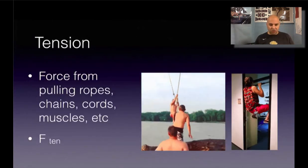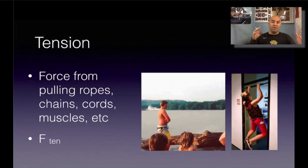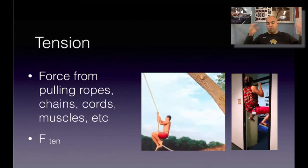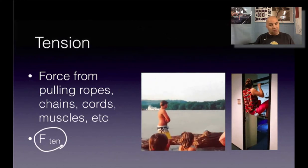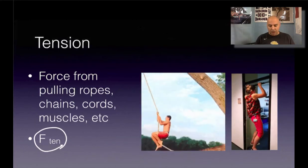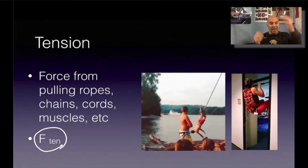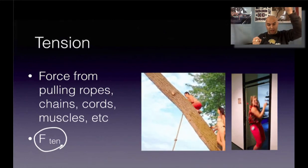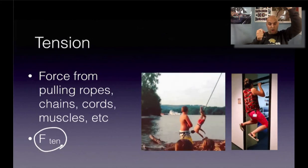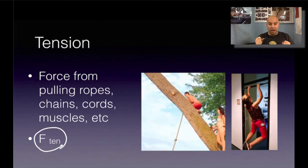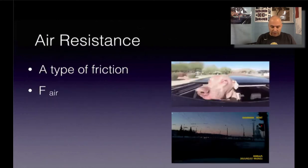The next one is tension. You have tension when you have ropes, chains, cords, muscles, or anything like that. I use F sub TEN for that. The idea is if you take a rope and pull on it, the force of tension is in the rope because something is pulling on it — that's going to be something we use quite a bit.